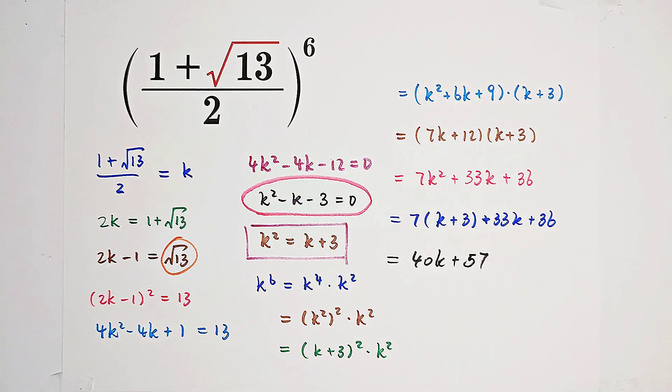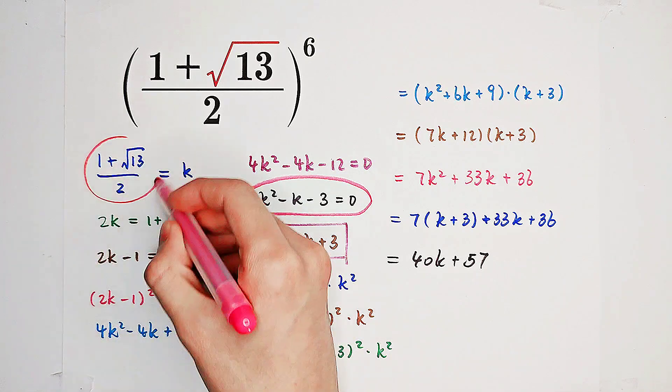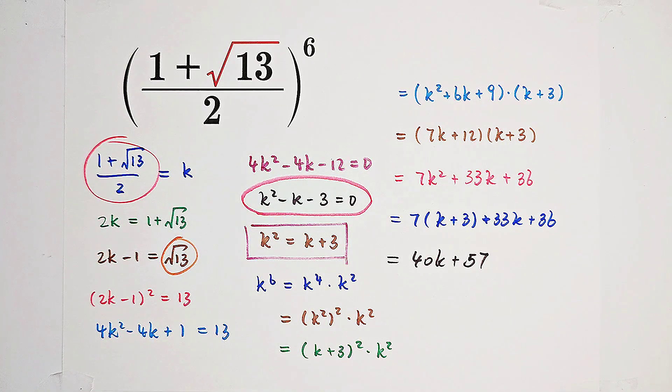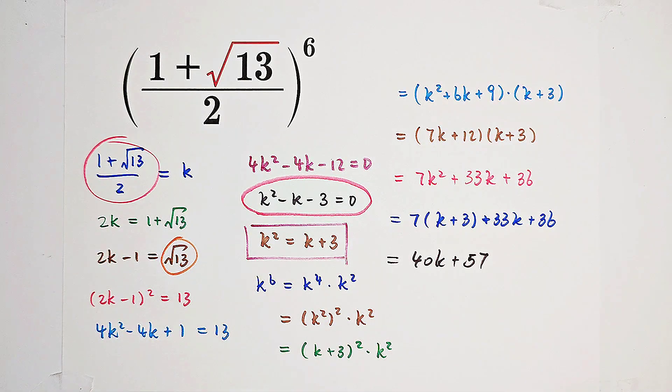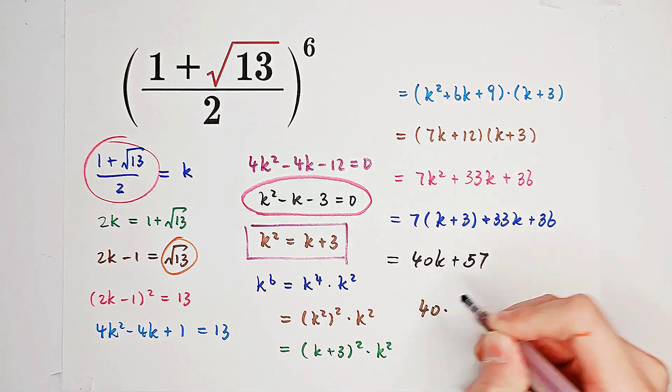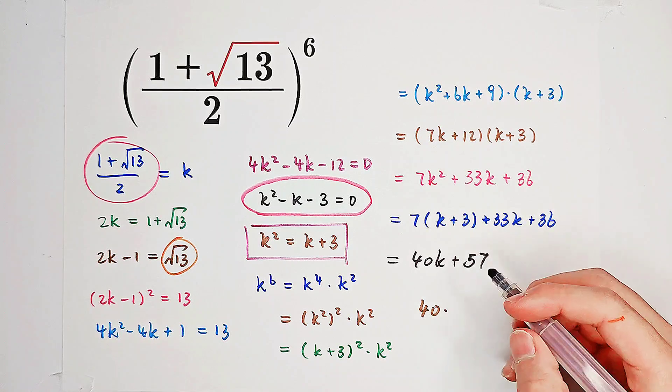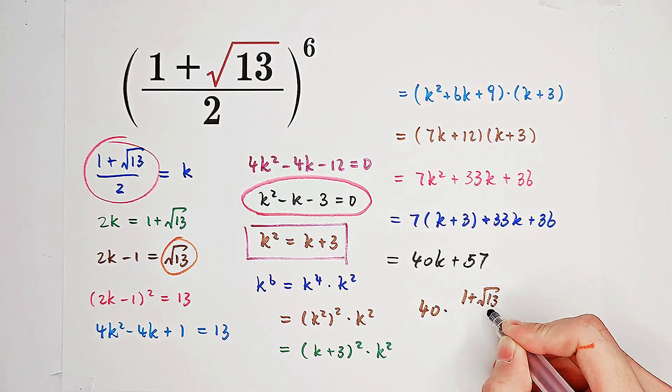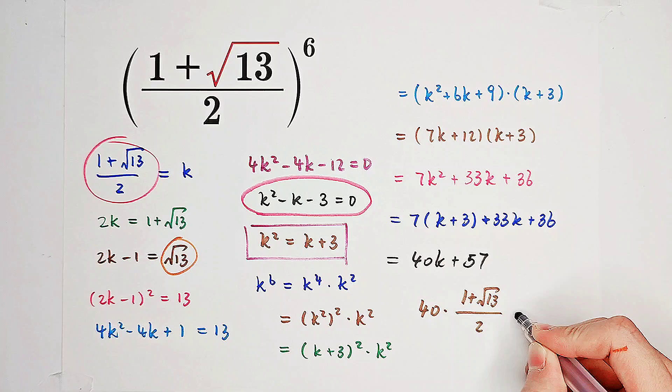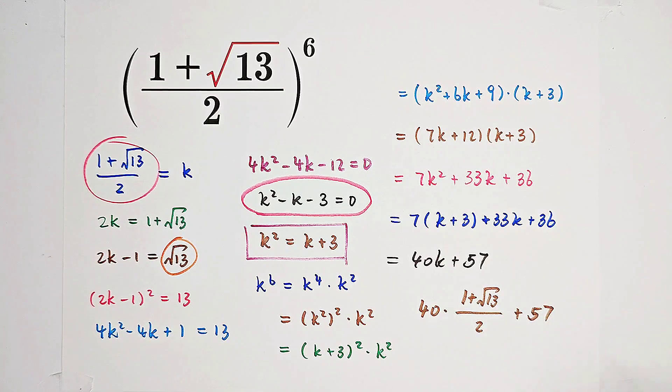Now, we know that k is just this thing. So substitute this one into here. It is 40 times, what is k? k is 1 plus square root of 13, over 2, then plus 57.